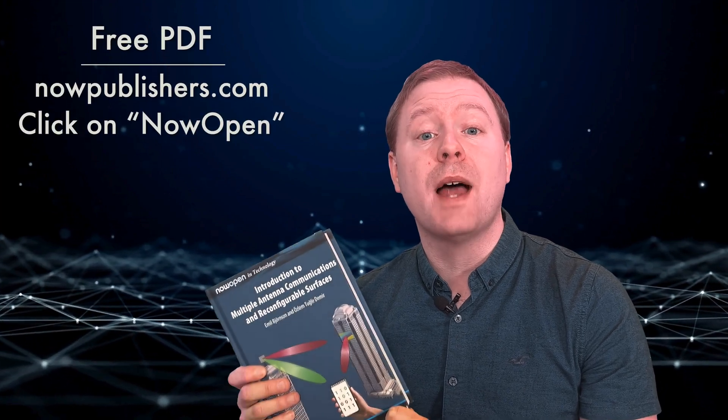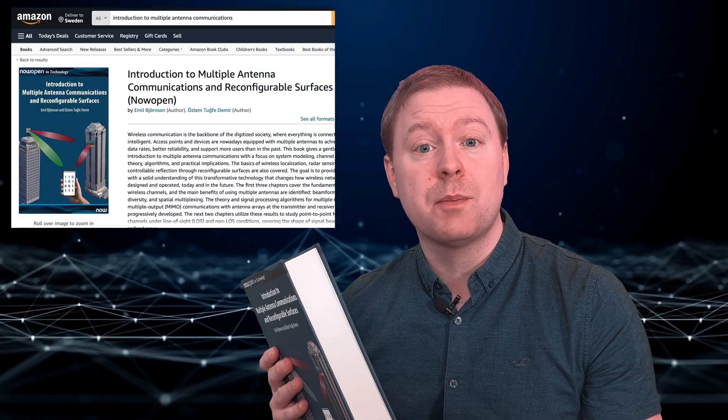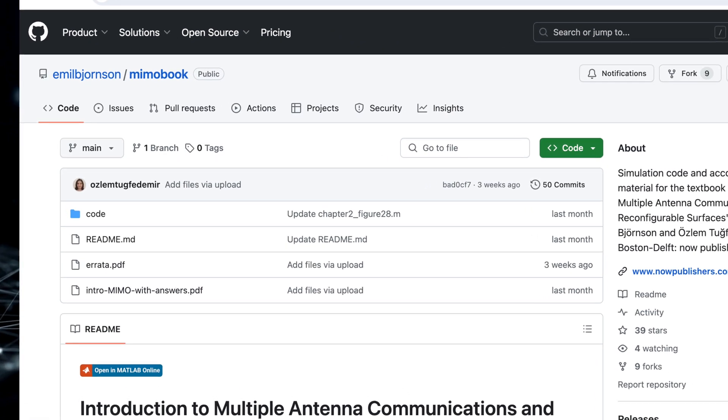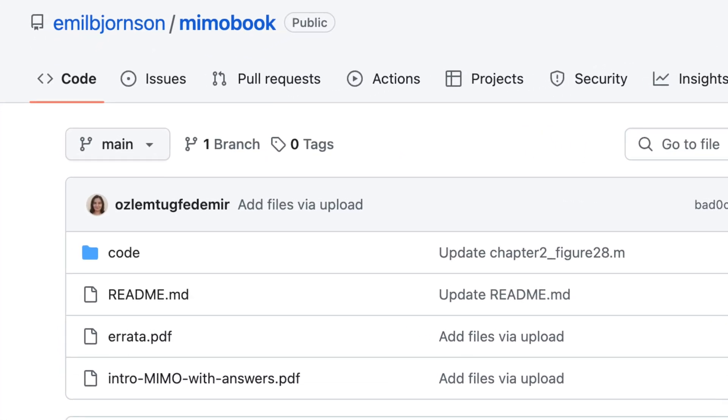You can download a free PDF of the entire book from nowpublishers.com, but you can also buy these beautiful color printed copies from all kinds of shops that are selling books online. On our GitHub page, you can download the simulation code that is regenerating all of the simulation plots in the entire book.